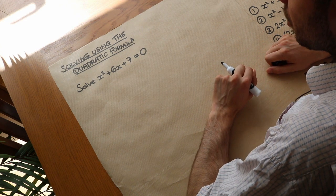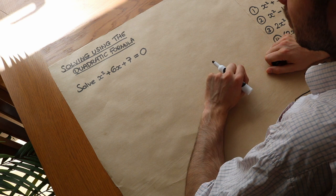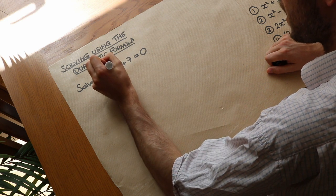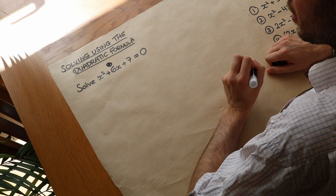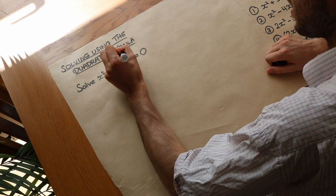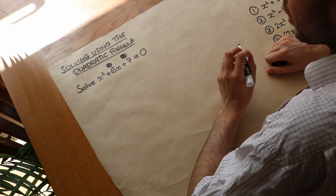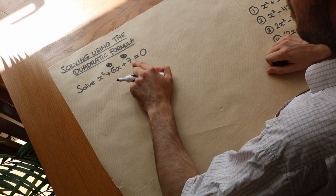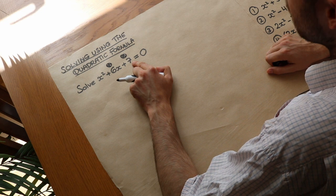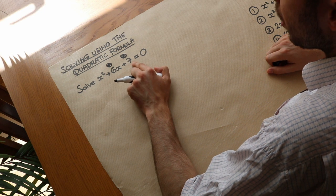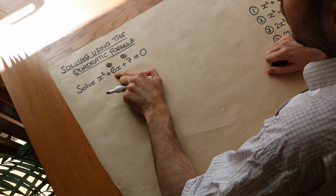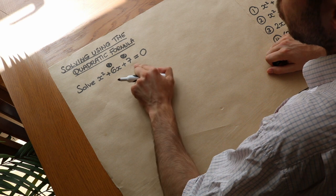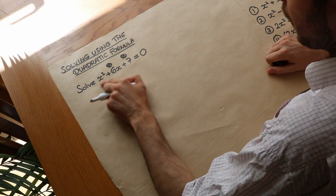Now what would we usually try to do if we were trying to do this by factorization? We'd find two numbers which add to give the middle number, the 6, and times to give the last number, the 7. 7 is prime so it can only be 7 and 1, or minus 7 and minus 1. But either way, whatever those numbers are, they don't add to give 6. So there are in fact no whole numbers which we could use to factorize this.